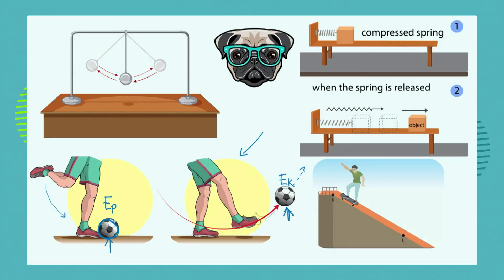Interestingly, what made the ball move? It didn't just decide to convert its potential energy into kinetic energy. The foot coming down had kinetic energy, and that energy was transferred to the ball with its potential energy — and now the ball is moving with kinetic energy. We see a transfer of energy happening in this system.